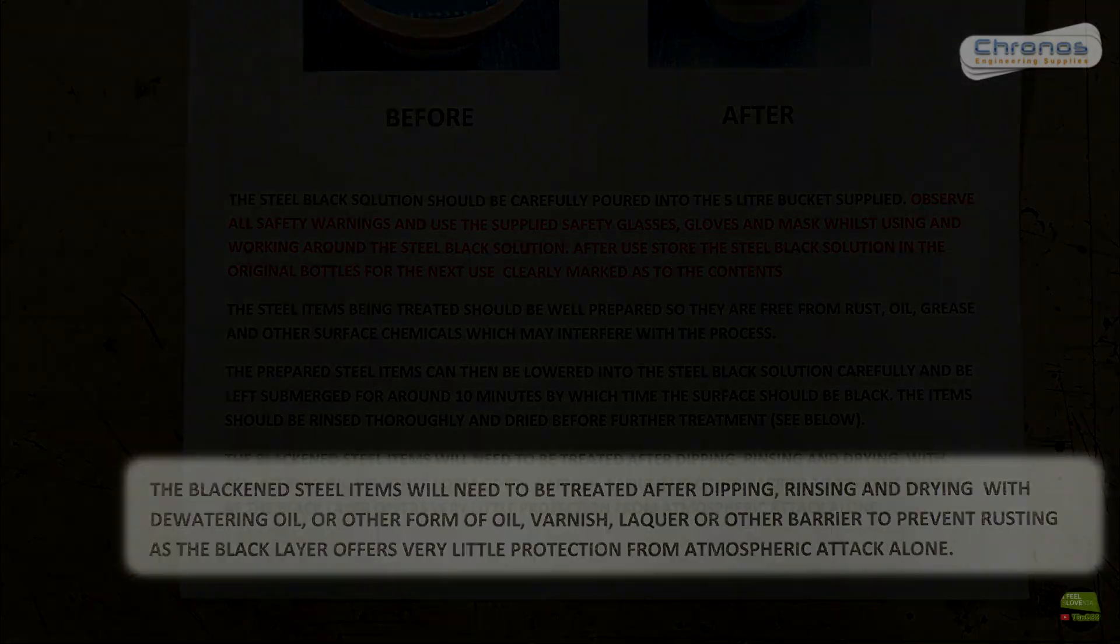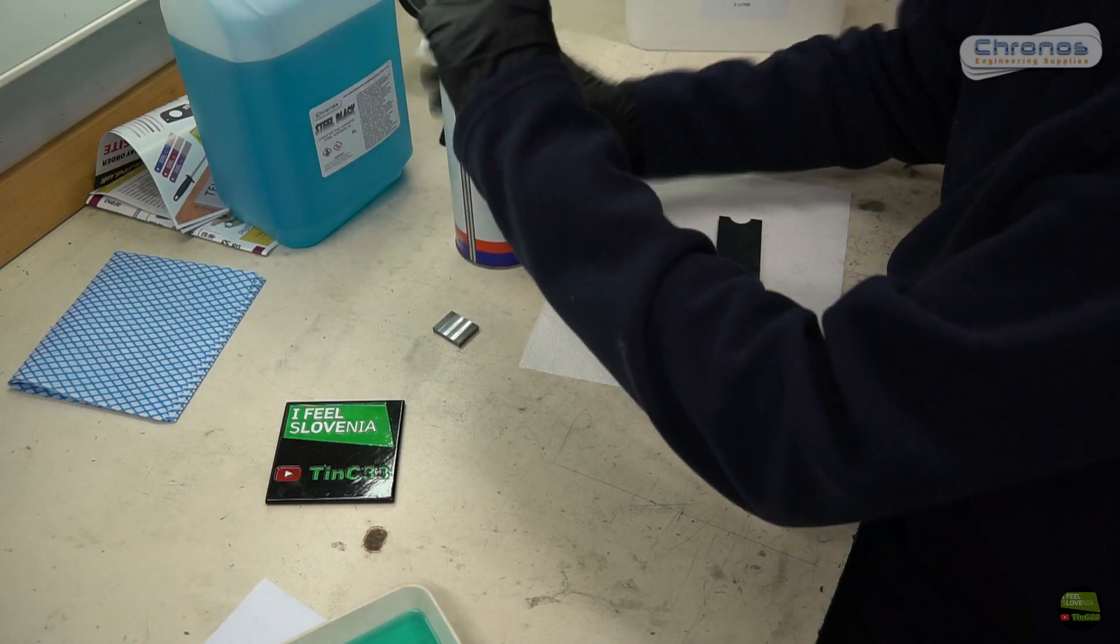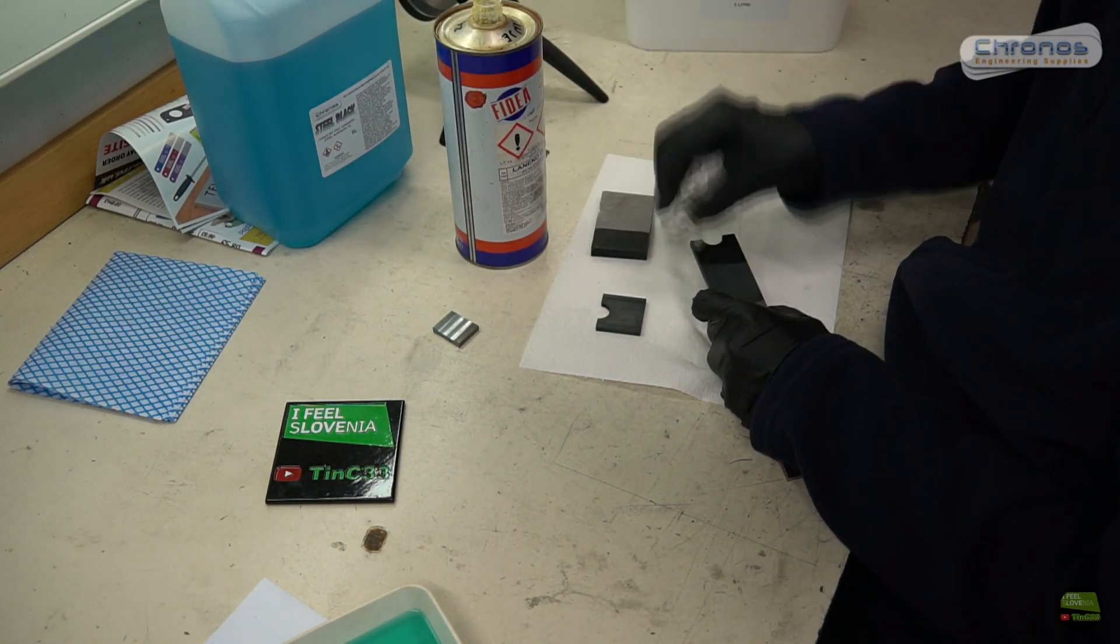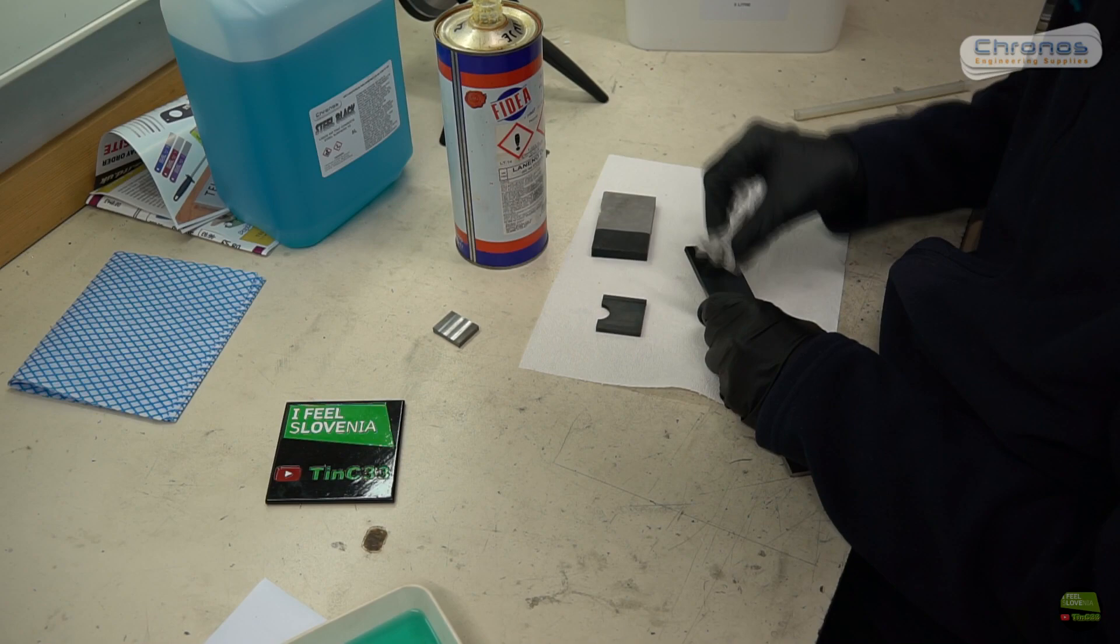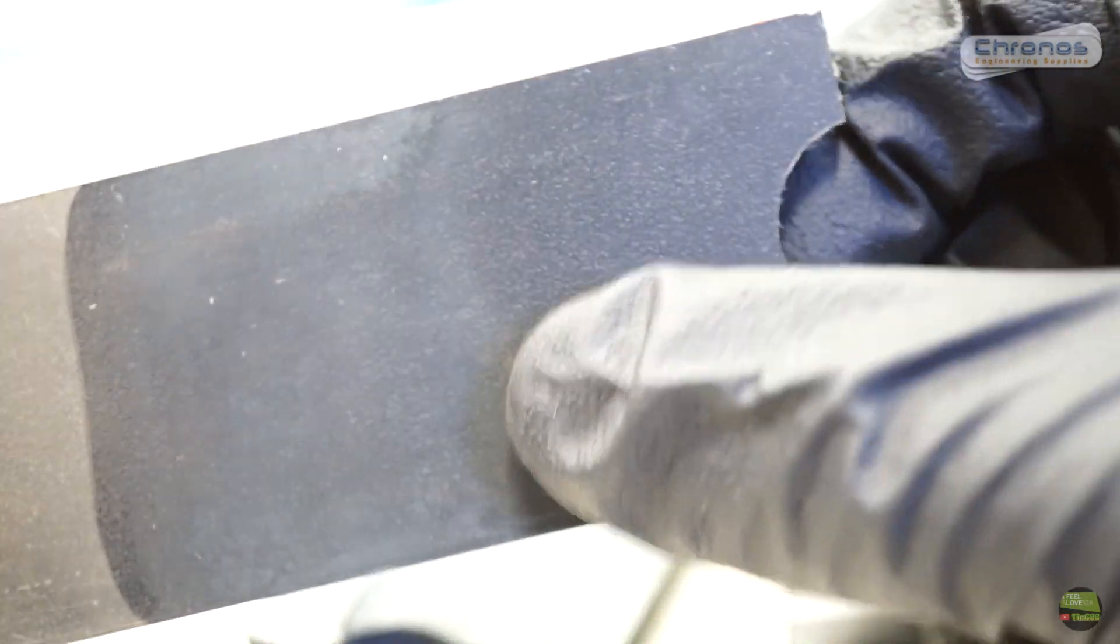When the parts are blackened we need to protect them with oil. I just apply a bit of flax seed oil on the towel and wipe the pieces to get a very thin layer of oil. Here you can see the difference with or without oil coating next day when the oil is completely dry.